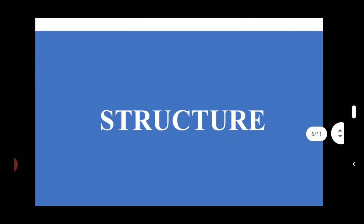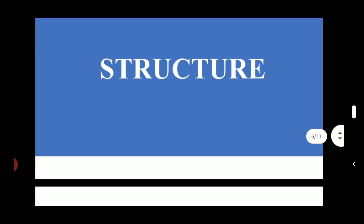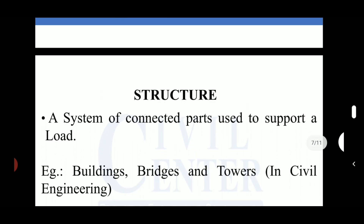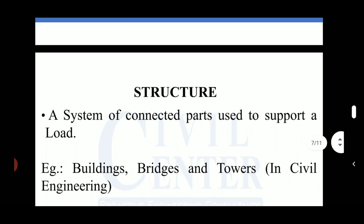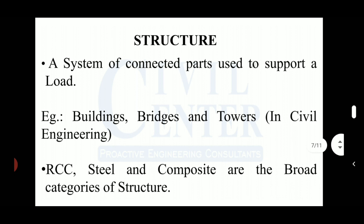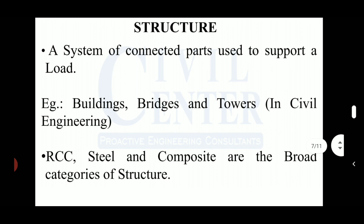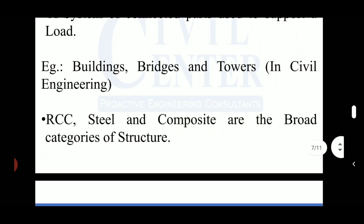Now let us know what a structure is. A structure is a system of connected parts used to support a load. Examples of structures in civil engineering are buildings, bridges, and towers. The broad classifications of structures we see around us are RCC structure, steel structure, and composite structure.